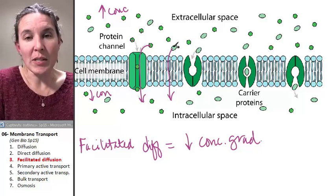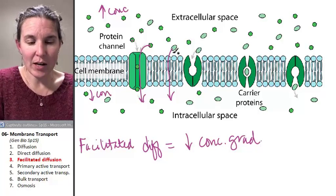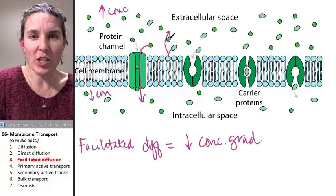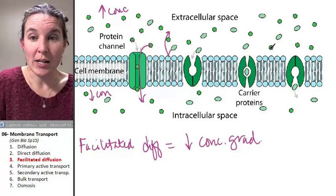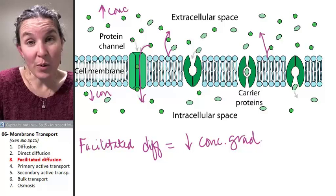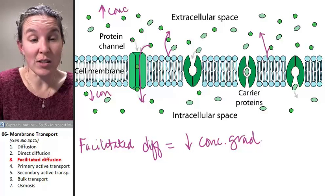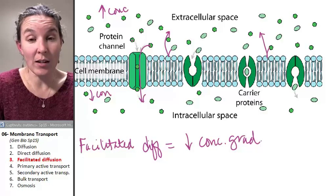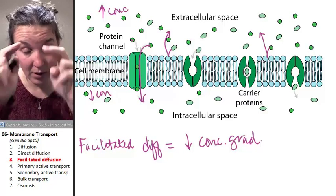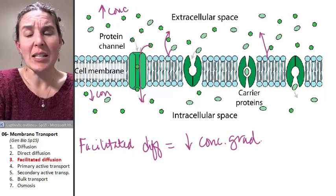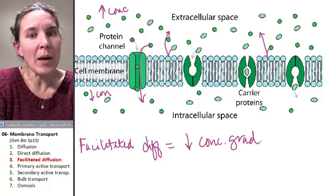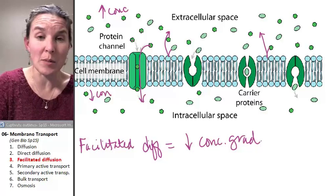Facilitated diffusion happens because if like this guy right here, he tries to go through but gets rejected. They want to get through and go down their concentration gradient and they only want to go through because of random molecular motion. But they get rejected every time they try to go through this cell membrane. So they need some help. They need a facilitator. Help me get through this mess, please.